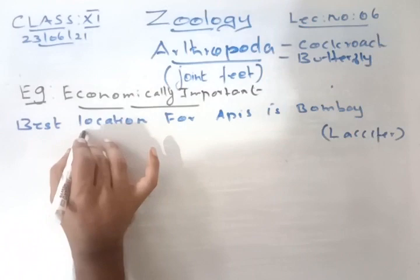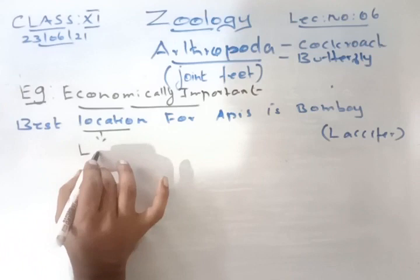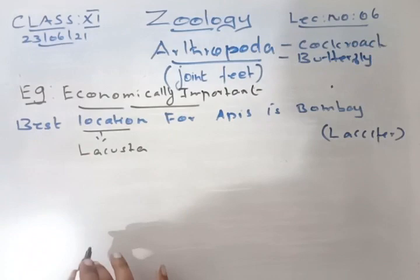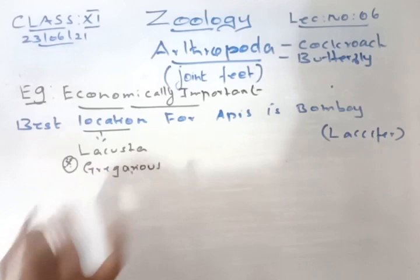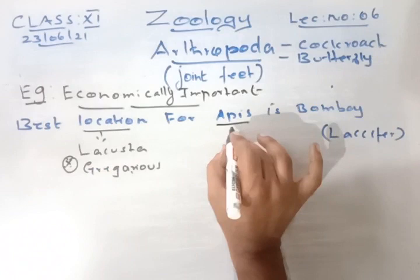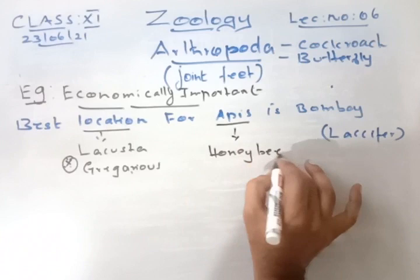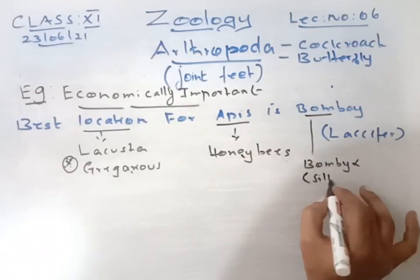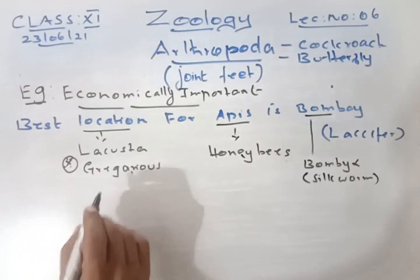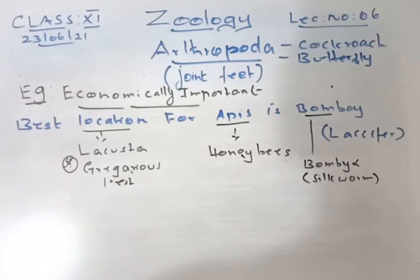Apis stands for Bombyx mori (silkworm), which is economically important. Lacifer is another economically important substance. For disease vectors, remember: an AC motor vehicle — An for Anopheles mosquito, A for Aedes, C for Culex.